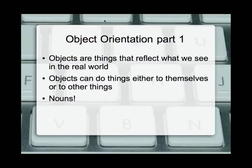The easiest way to find out if something is an object is to look at the word for it — is it a noun? The idea that we have a noun that represents this concept helps us find out what our objects are when we're writing a program. By using the analogy of a noun for a thing, we can understand what we're working on and what we need to do.